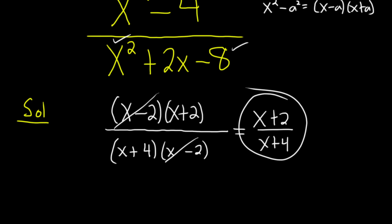So hopefully, and obviously, x can't be two in any of this. And x can't be negative four. But that's kind of implied from the beginning. Even at the beginning, that's also true.